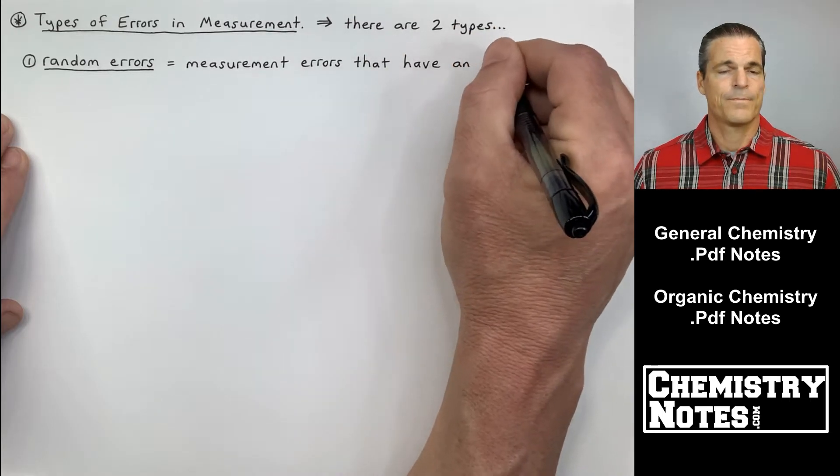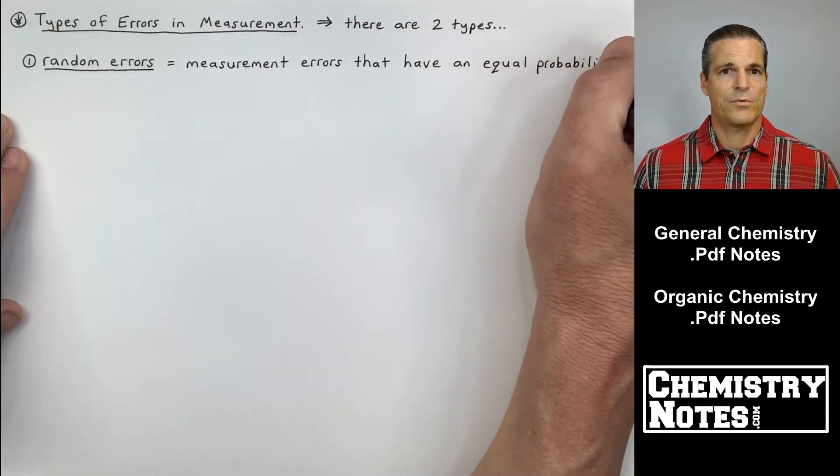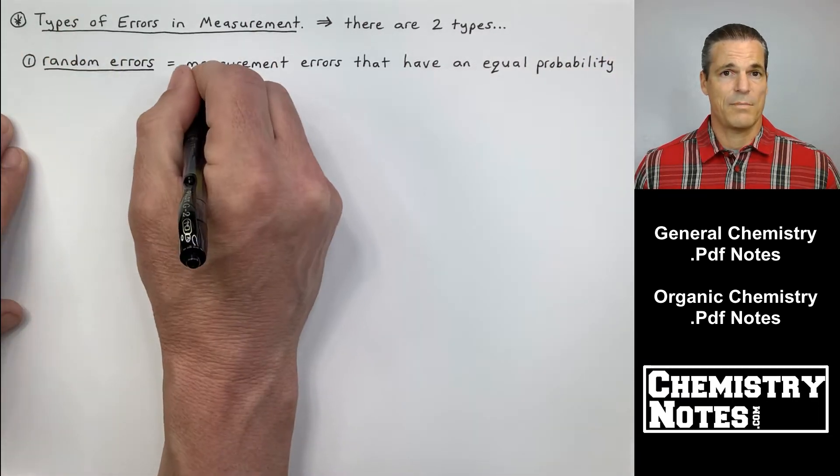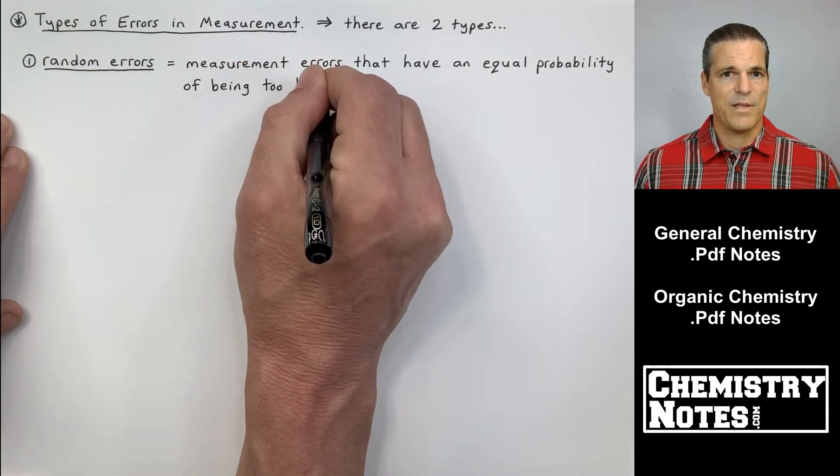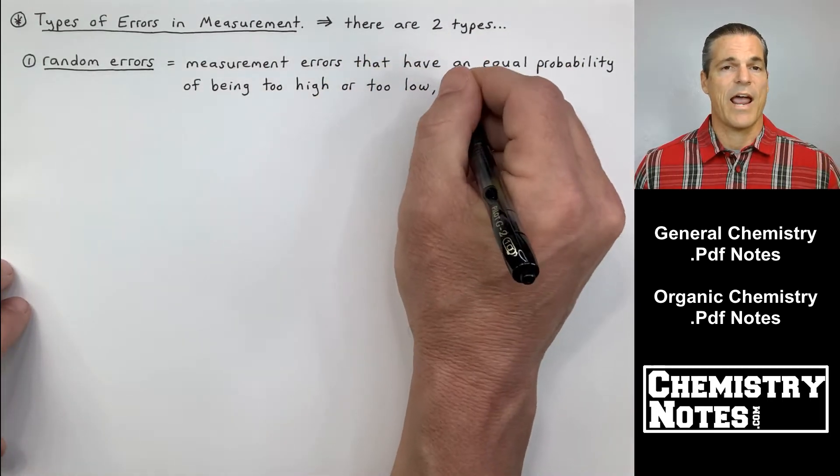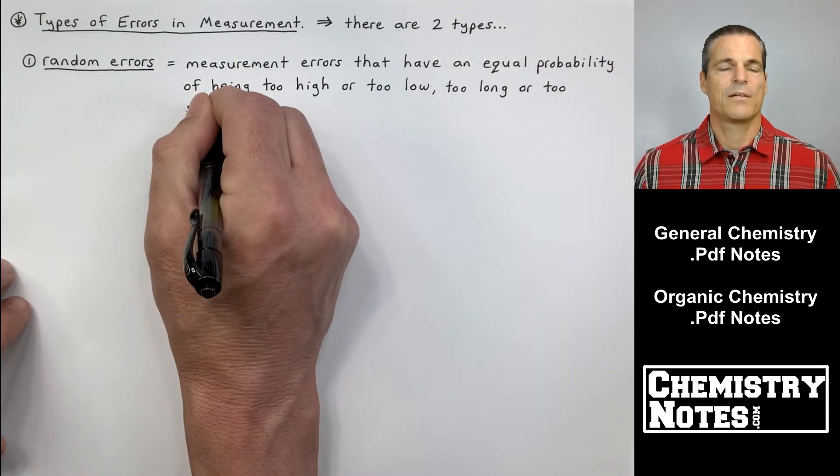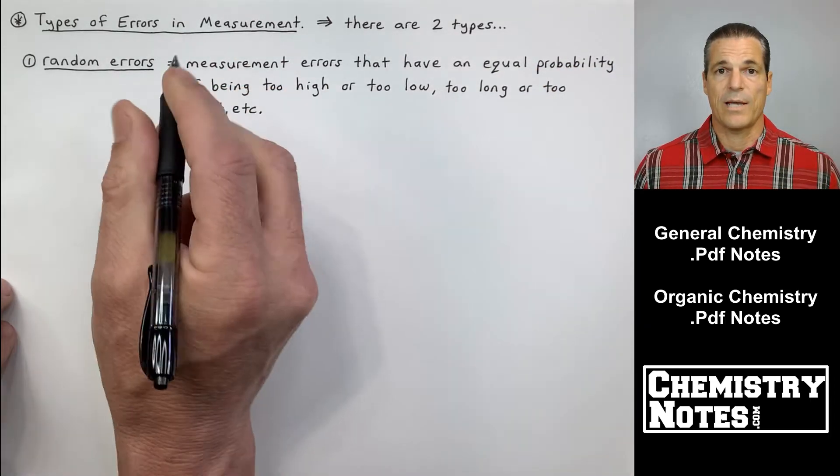This video, section 1 video number 3, covers two topics. The first topic I'm starting to write down right now: types of error and measurement. And in the second half of this video, we'll start to talk about accuracy versus precision. All right, so let's get started. Types of error and measurement - there are two types of errors.